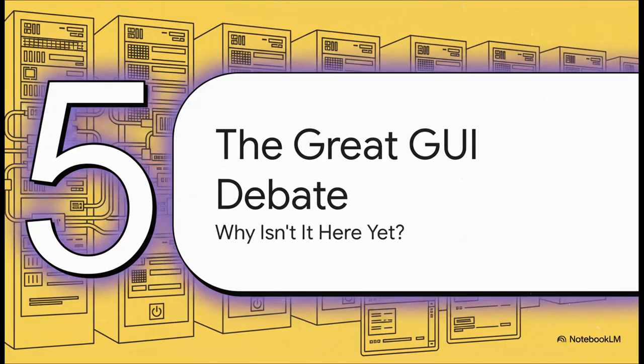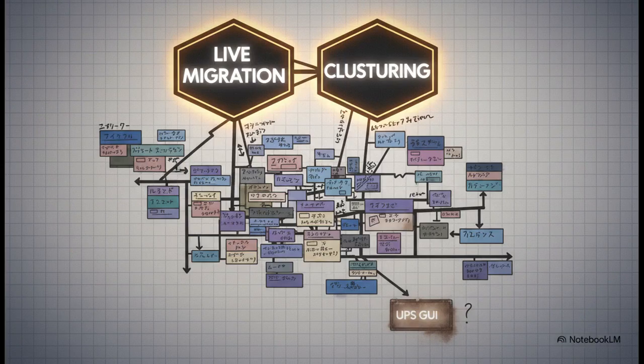So if this is so obviously important and the community is practically begging for it, why isn't it in the Proxmox GUI yet? The most likely answer comes down to priorities. The Proxmox team has done an amazing job integrating huge, complex, enterprise-level features like Ceph Storage and Live VM Migration. A UPS interface, while crucial for many, was probably seen as a more niche feature compared to that other heavy lifting.